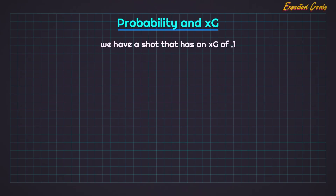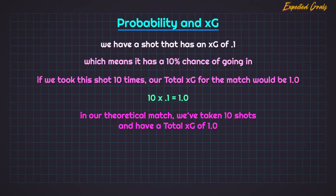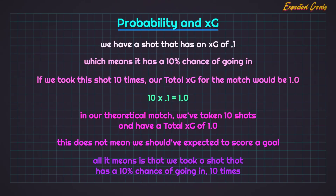At this point, sadly, we have to do some math. We have a shot that has an XG of 0.1, which means it has a 10% chance of going in. If we took this shot 10 times, our total XG for the match would be 1.0. The equation: 10 shots multiplied by our 0.1 XG from each of those shots gives us a total XG of 1.0. In our theoretical match, we've taken 10 shots and have a total XG of 1.0. This does not mean we should have expected to score a goal — all it means is that we took a shot that has a 10% chance of going in 10 times.